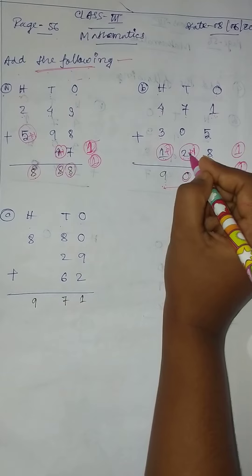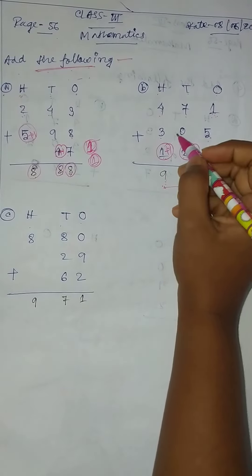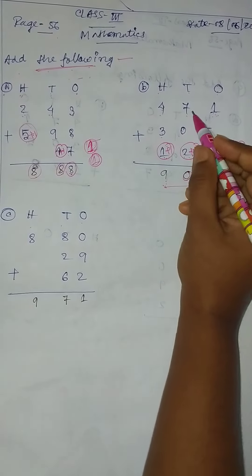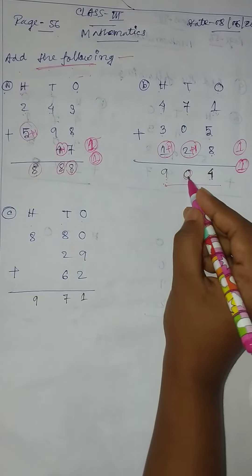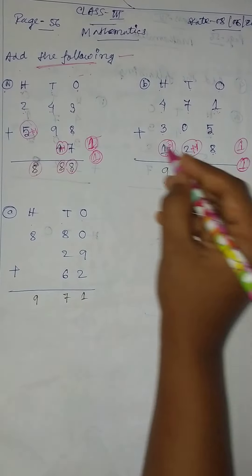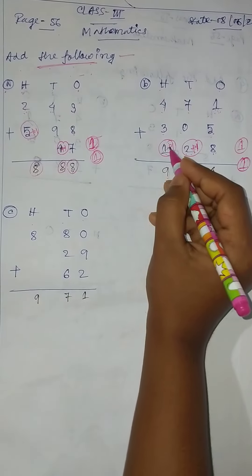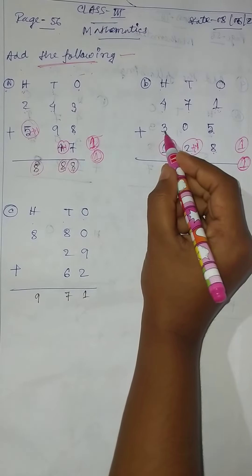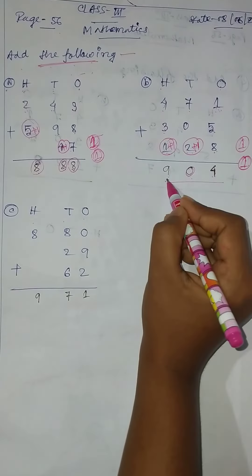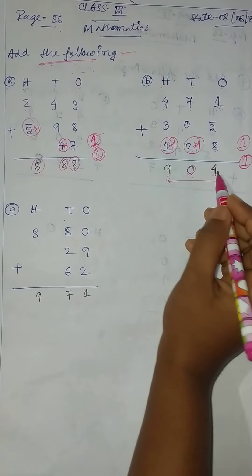2 plus 1 equal to 3. 3 plus 1 equal to 3. 3 plus 7 equal to 10, so 10 is 0 and 1 carry. 1 plus 1 equal to 2, 2 plus 3 equal to 5, 5 plus 4 equal to 9, so answer 904.